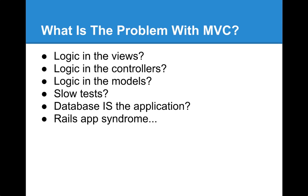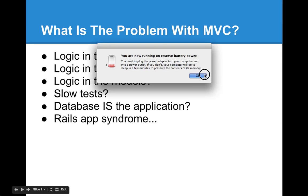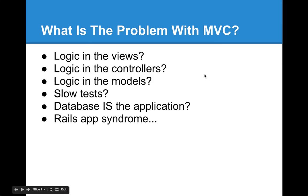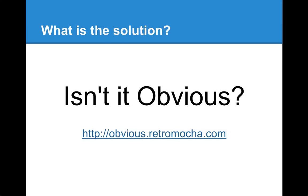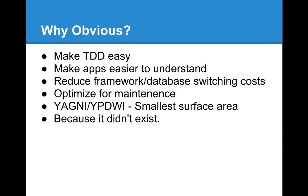Considering all of these problems that seem to face many, many developers, I've come up with a concept I call the Obvious architecture. So what Obvious does is it makes test-driven development easy, or easier. It makes apps easier to understand. It reduces the framework and database switching costs.